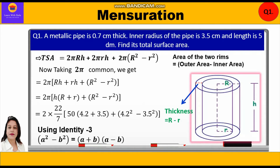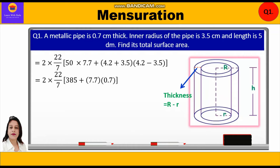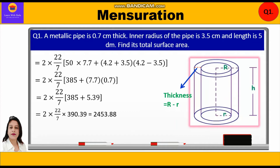This will simplify our calculations. We write 2 × (22/7) × [50 × 7.7 + (4.2 + 3.5)(4.2 − 3.5)], which gives 2 × (22/7) × [385 + 7.7 × 0.7], equal to 2 × (22/7) × 390.39, which equals 2453.88 cm².